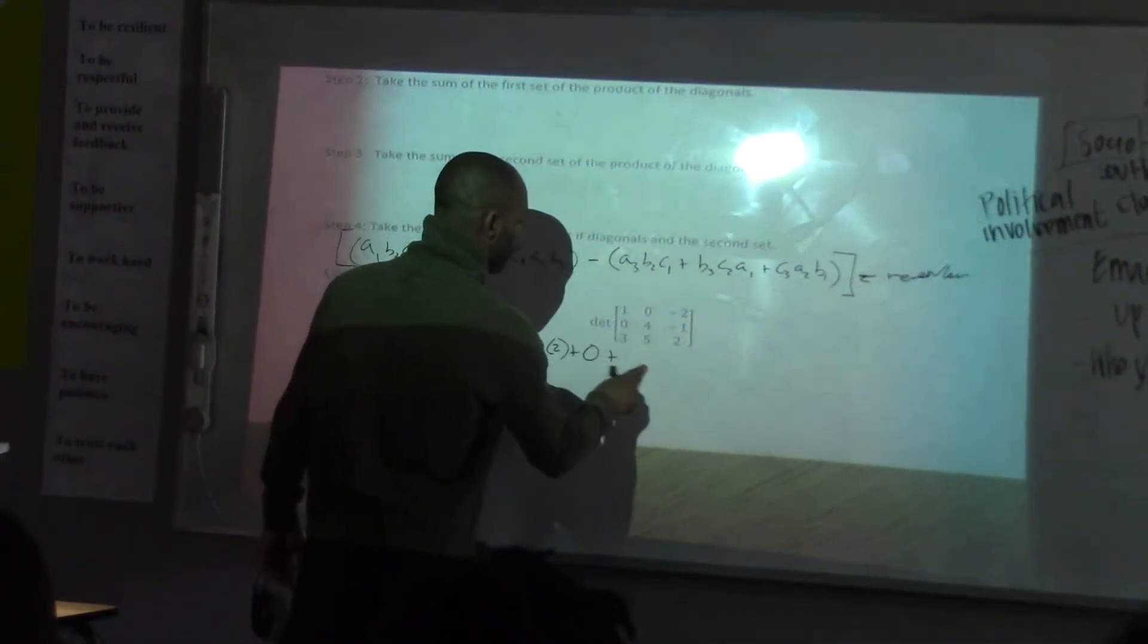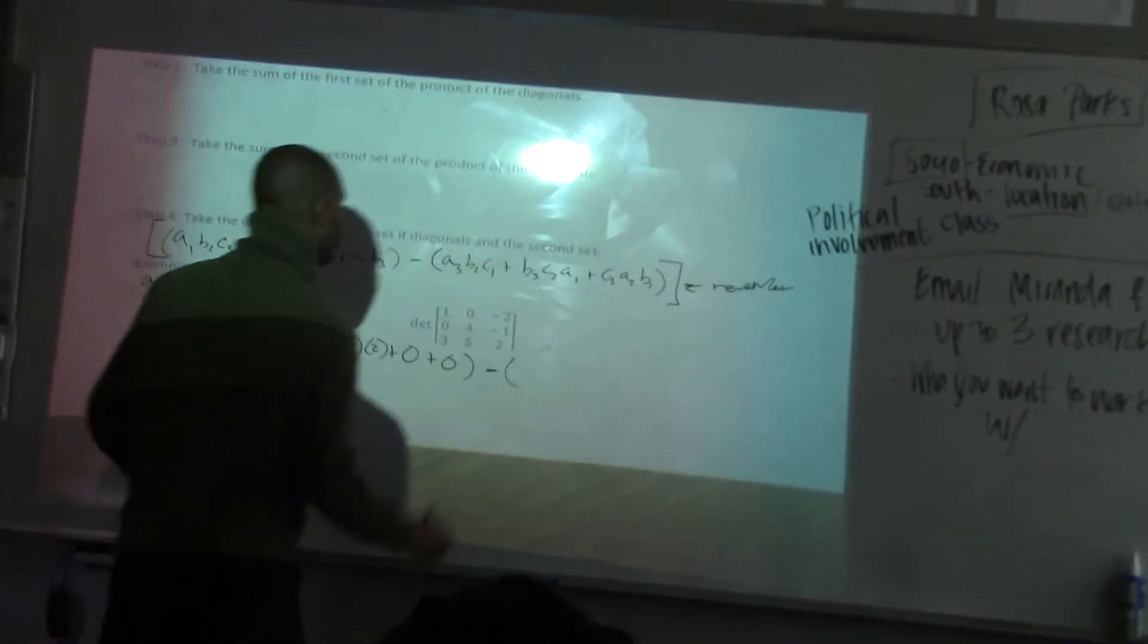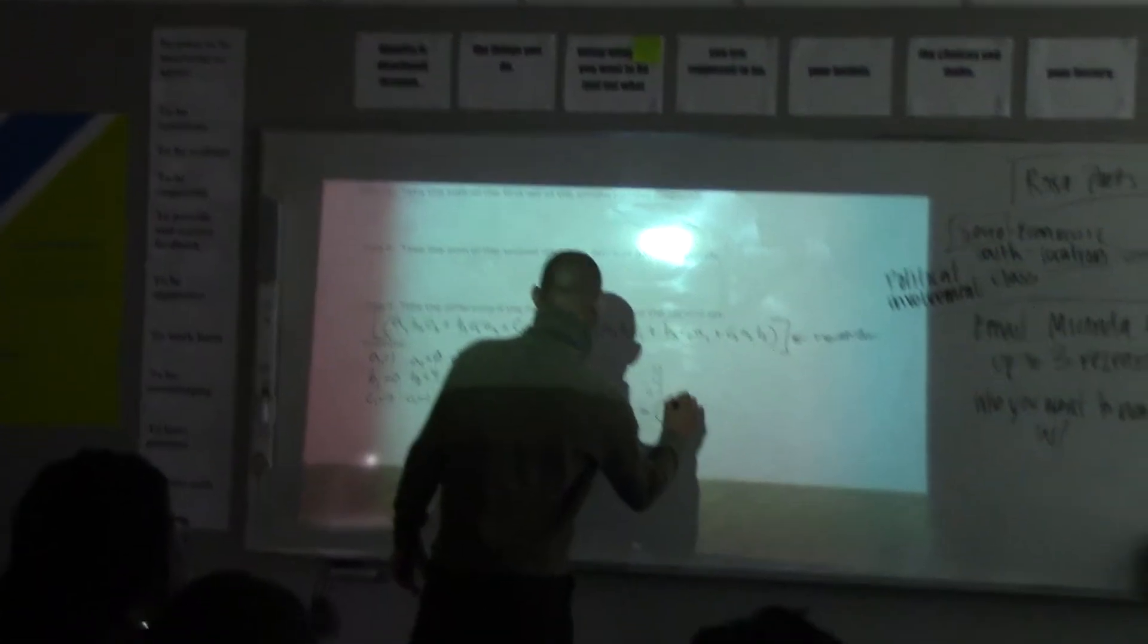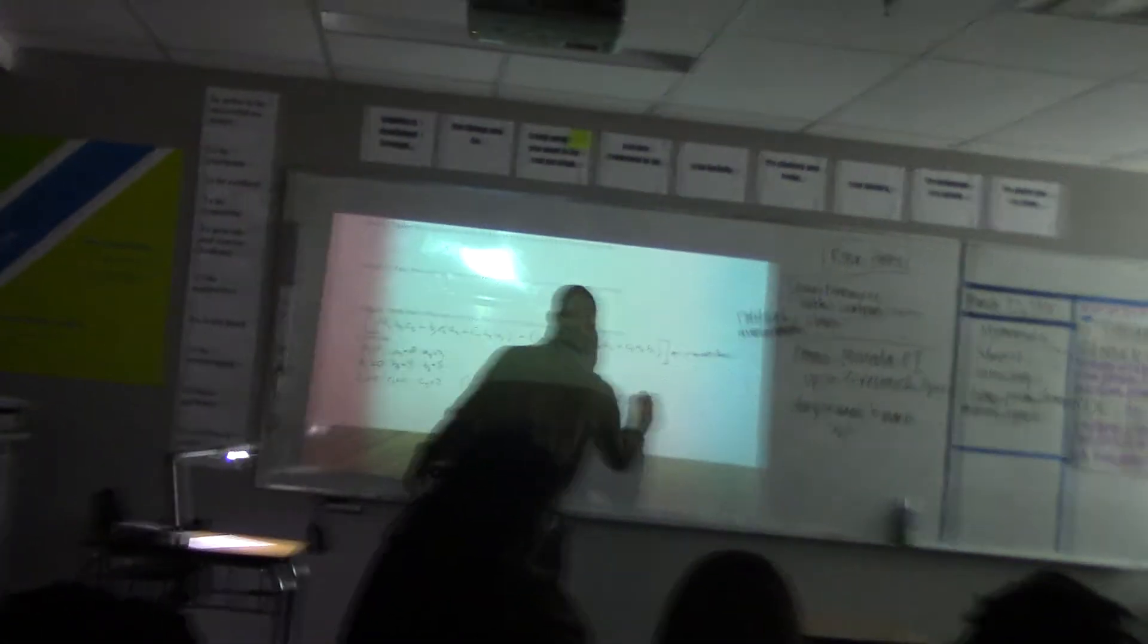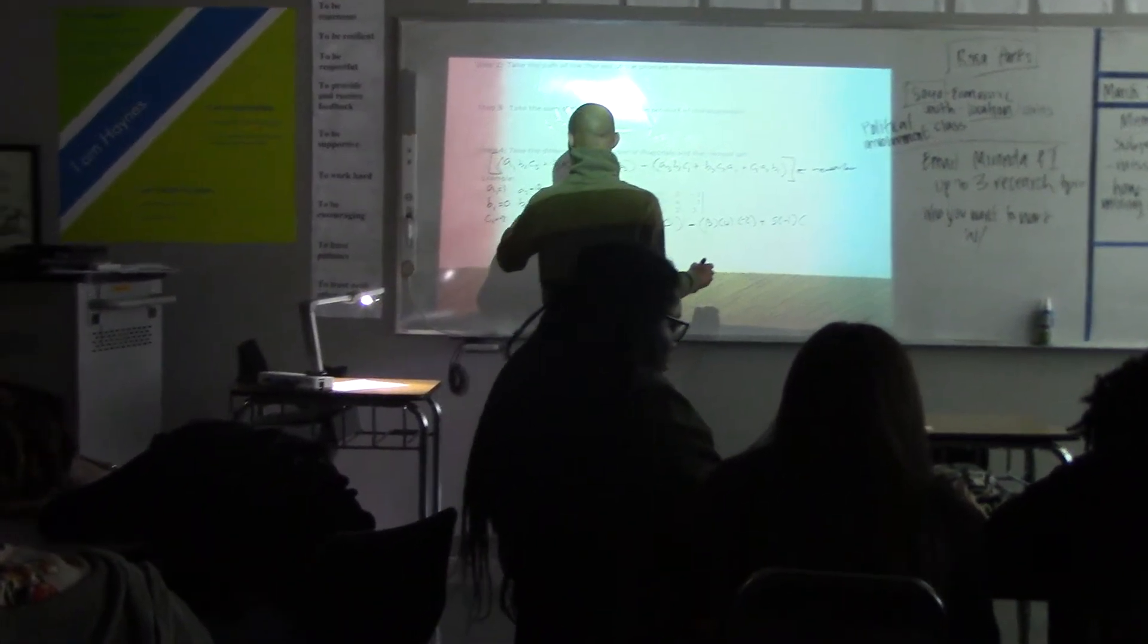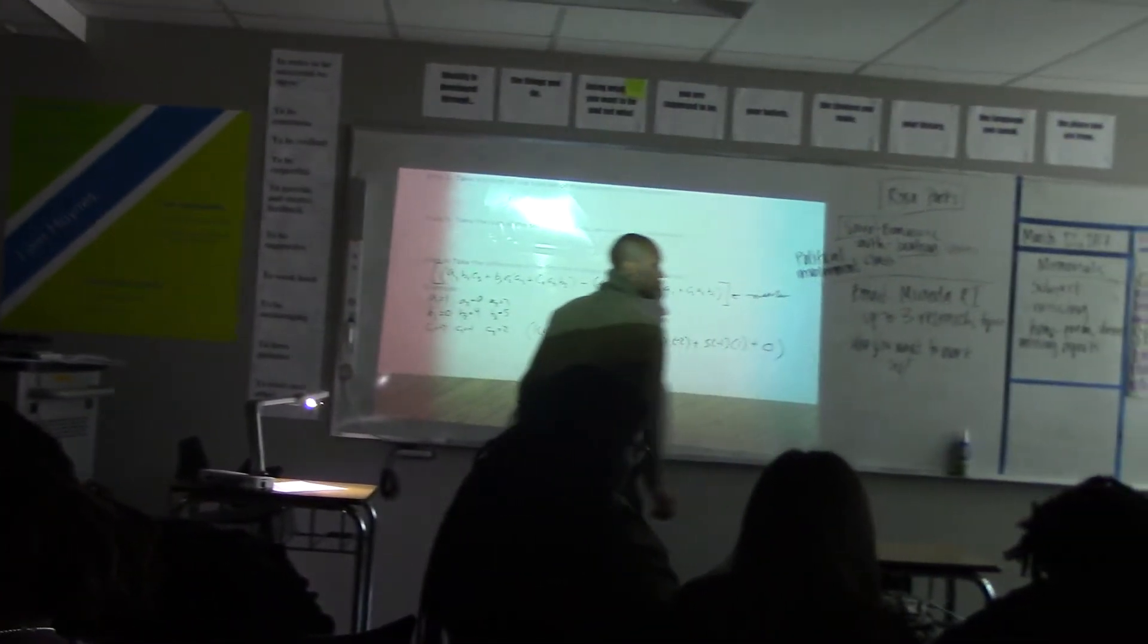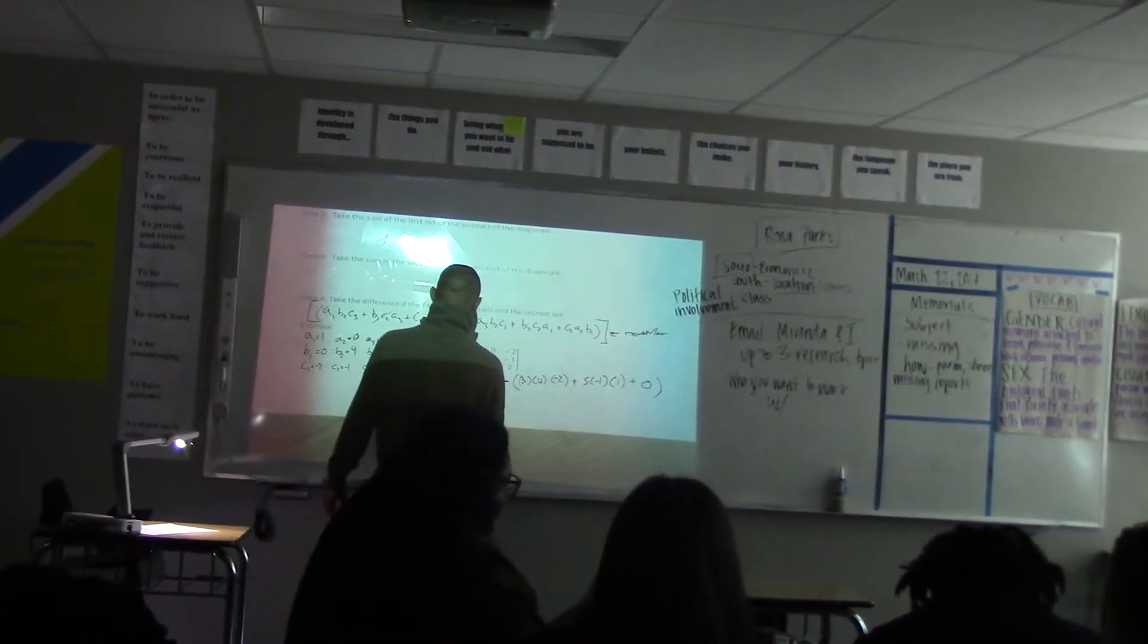0 times anything, 0, is C1. C1 is negative 2 times A2, which is 0. So that's just going to be 0. And you can take that and you can subtract that from right here. So A3 is 3, B2 is 4, so 3 times 4 times negative 2 plus B3 is 5 times C2 is negative 1. So A1 is 1. So plus 0.